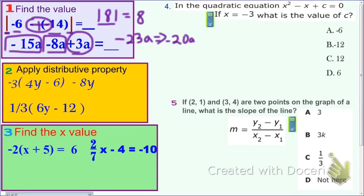Number 2. Distributing. Negative 3 times 4Y is negative 12Y. Negative 3 times negative 6 is positive 18. And I have minus 8Y. Like terms, this one and this one gotta go stay together.